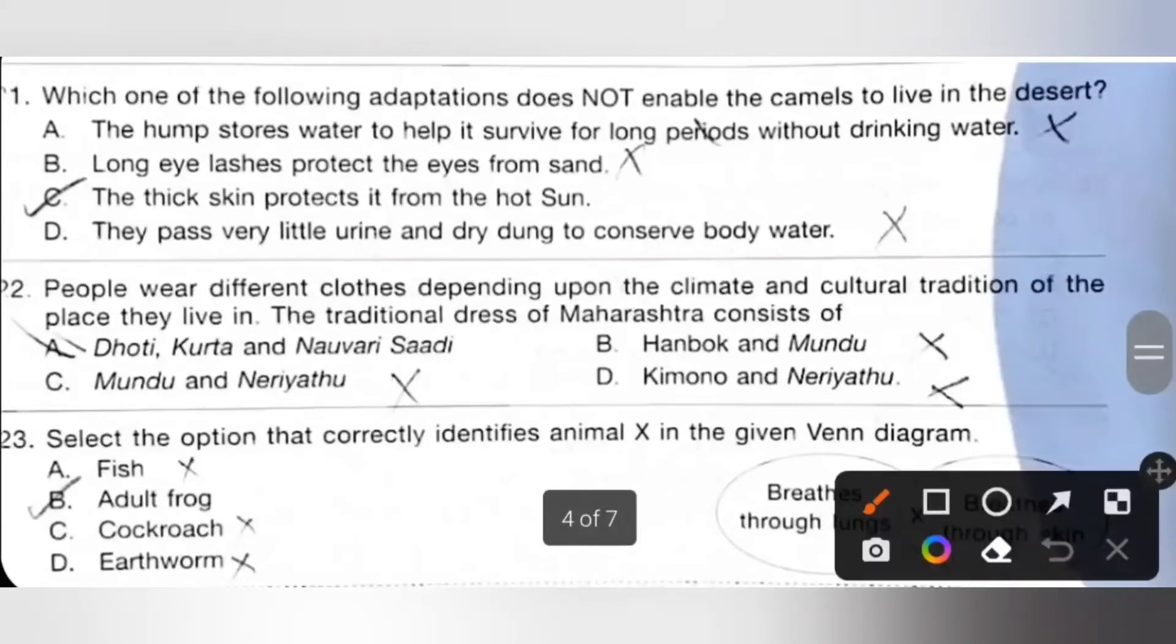Next: Which one of the following adaptations does not enable the camel to live in the desert? A: The hump stores water to help it survive for long periods without drinking water. It is incorrect because the hump stores fat. So option A is the correct answer.